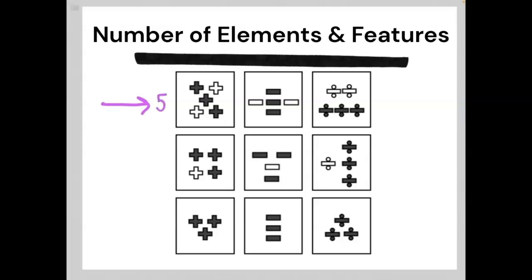In the top row, there are five shapes in each element. In the middle row, there are four, and in the bottom row there are three.